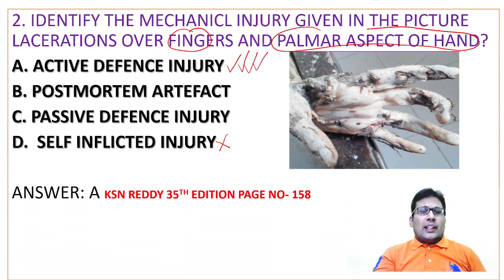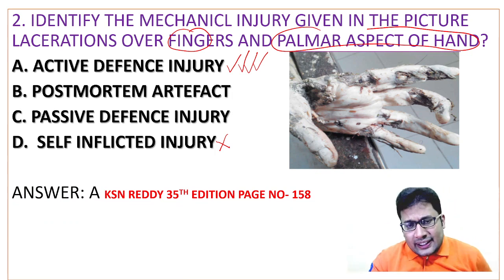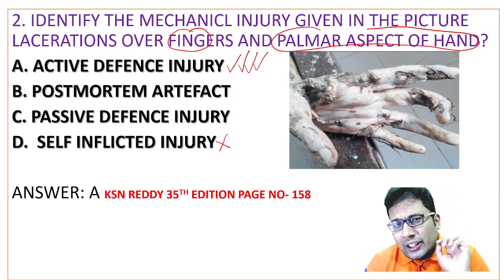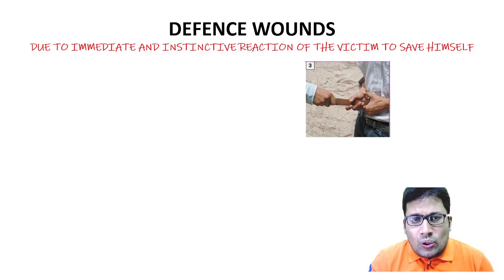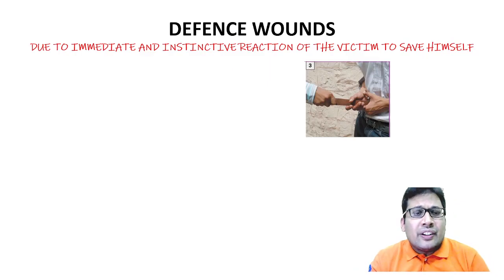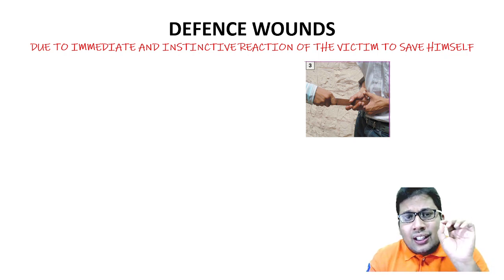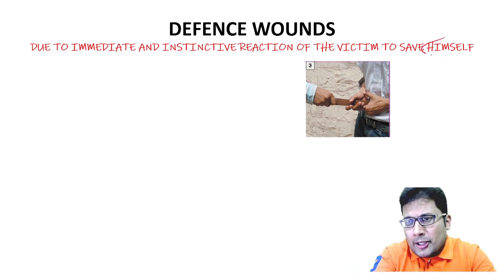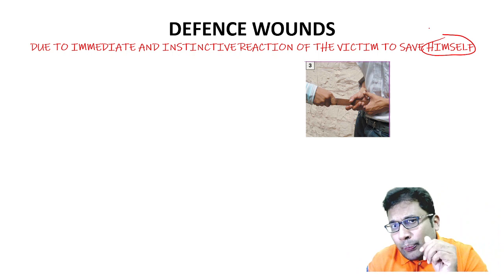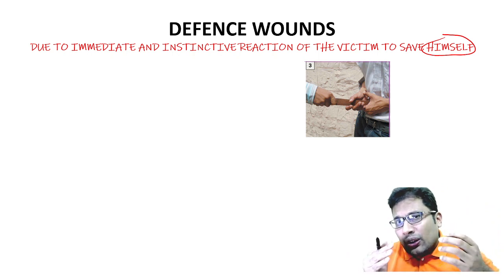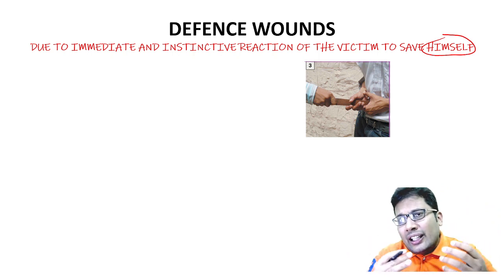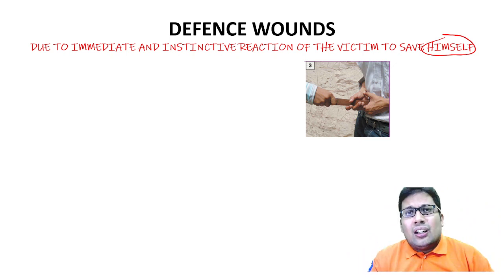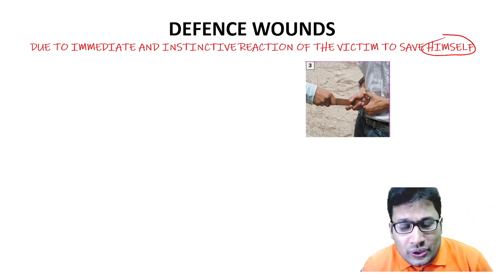This is active defense injury according to KSN Reddy, 35th edition, page number 158. Defense wounds are those due to the immediate instinctive reaction of the victim to save himself. Consider a case of attempted murder — the person tries to escape or protect from the assault. In that case, defense wounds are seen. There are two types: active and passive.